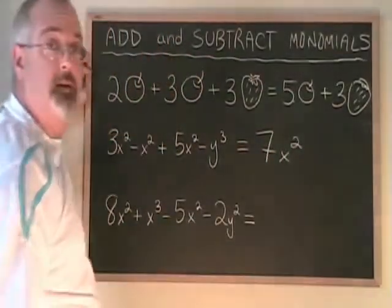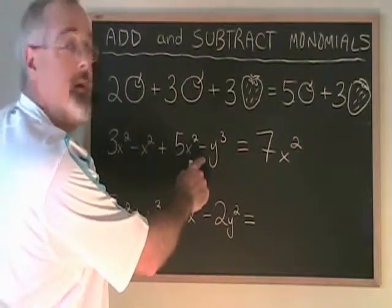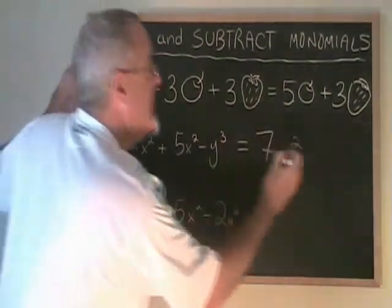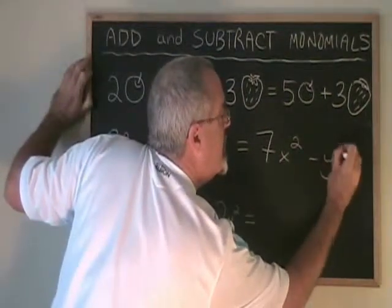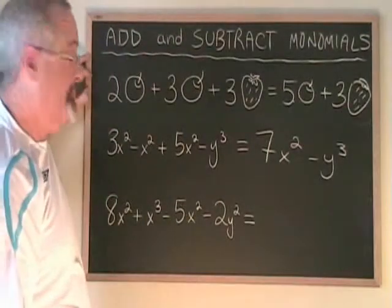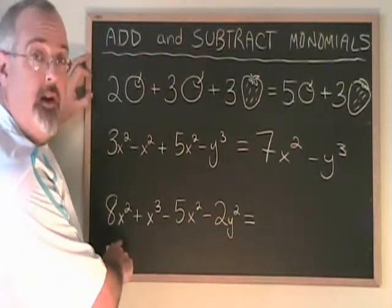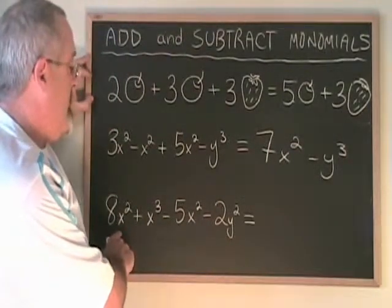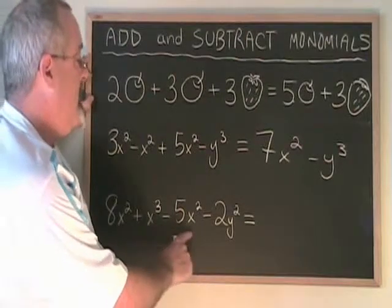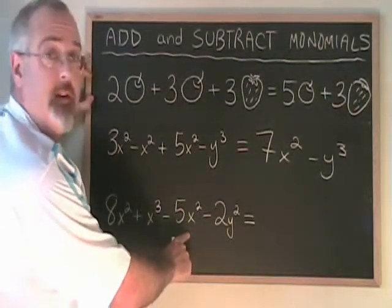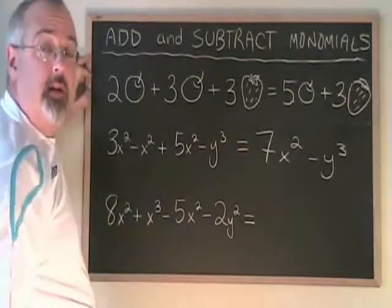In our answer, the dissimilar term, minus y cubed, is kept separate, giving us our final answer. In example three it says eight x squared plus x cubed minus five x squared minus two y squared.